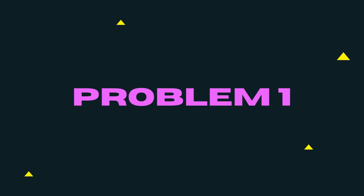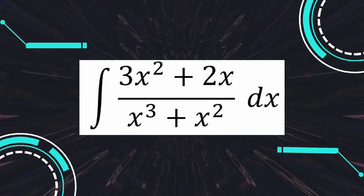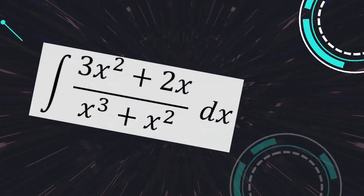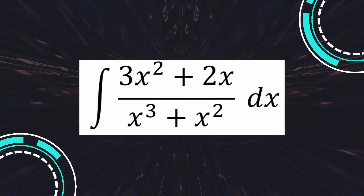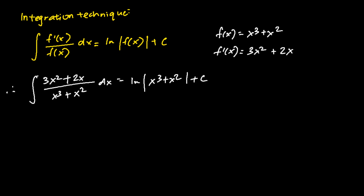The first integration problem we'll ask ChatGPT to solve is to find the integration of 3x squared plus 2x over x cubed plus x squared. This seemingly complex-looking integration problem is pretty much straightforward to solve by applying the integration technique: the integration of f prime x over f(x) dx gives the log of absolute f(x) plus c. For this particular problem, my f(x) is x cubed plus x squared, and if I differentiate with respect to x, we get 3x squared plus 2x.